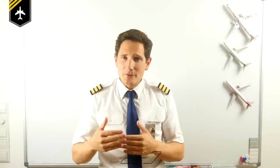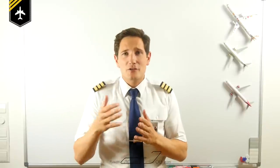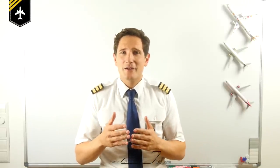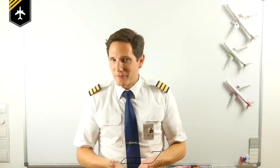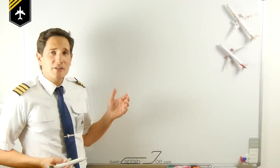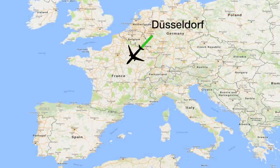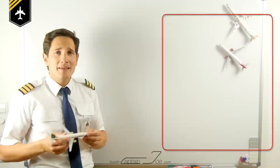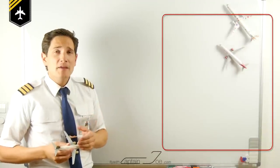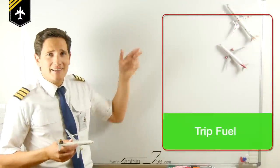On most flights you only fuel up the plane with the amount of fuel you need for the trip to get to your destination, and a little bit more in case you have to alternate to another aerodrome, and some more to comply with flight regulations. So let's imagine this is our fuel tank and we would be flying from Dusseldorf to Faro, Portugal. Regarding our flight plan, we need this amount of trip fuel — so let's put that into the tank.